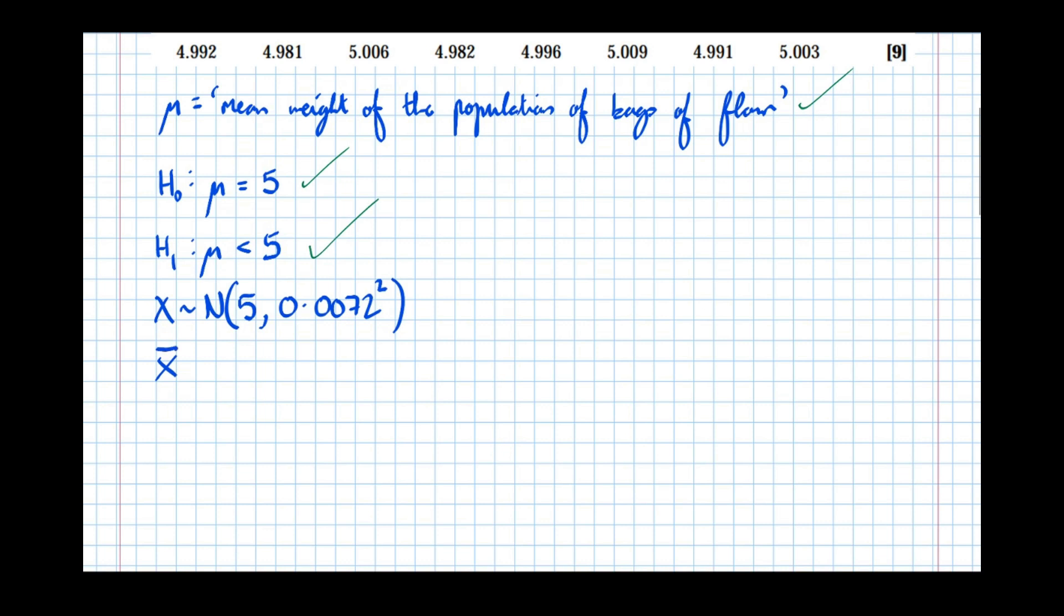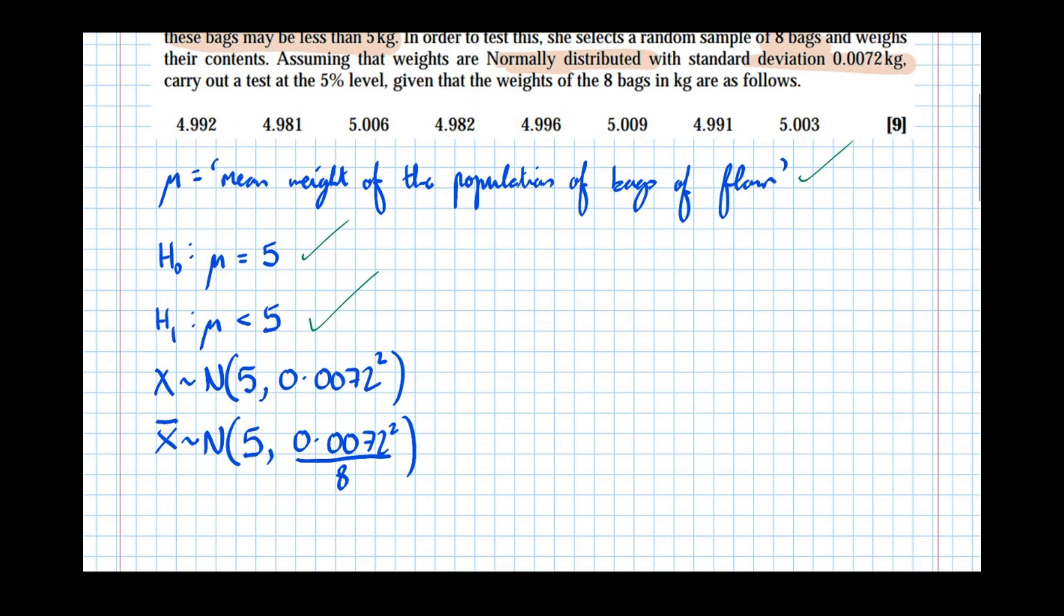So X̄, the mean weight of a bag of flour, has a normal distribution. Again, the mean is 5. However, now the variance is 0.0072 squared, but the sample size was 8. So that's the distribution that we're testing now. We're going to carry out the test using this distribution.